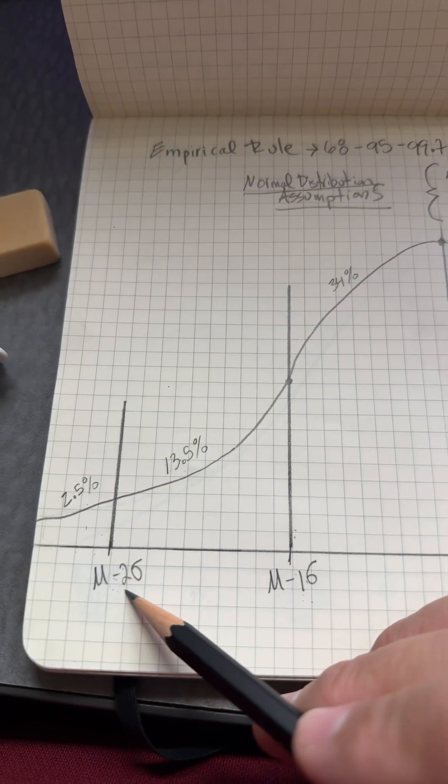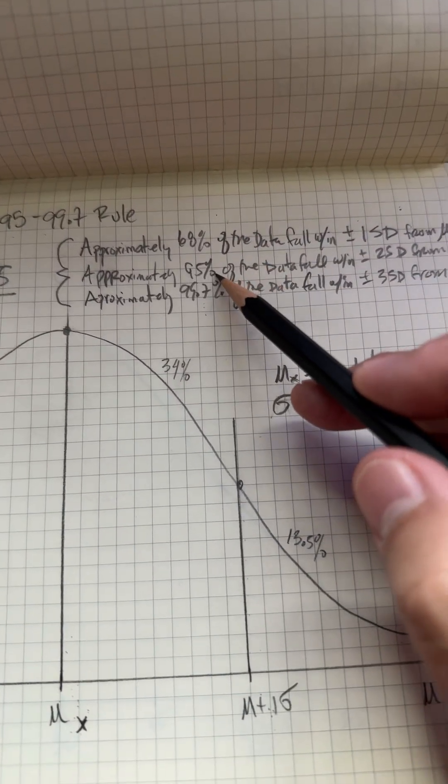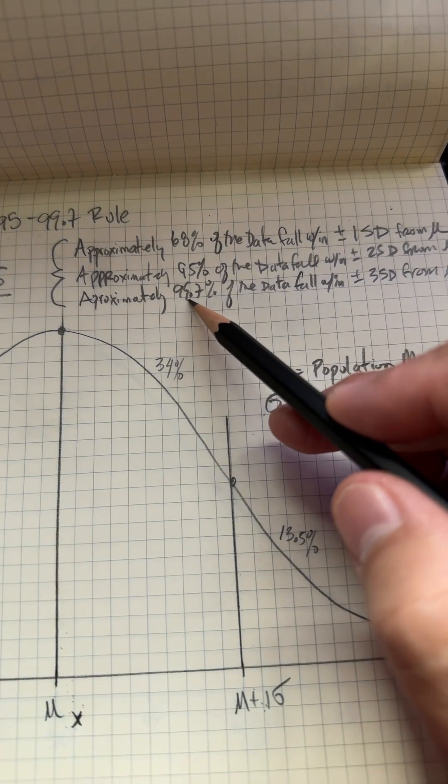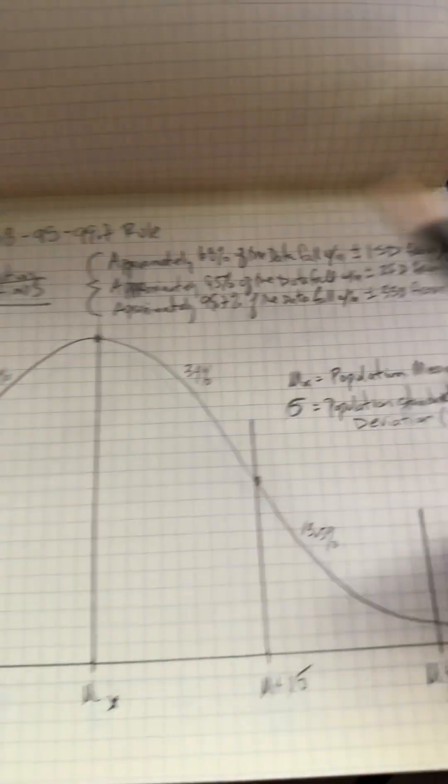From minus two standard deviations to positive two standard deviations, we get 95 percent. And from negative three standard deviations to positive three standard deviations, we have 99.7 percent.